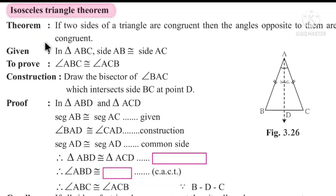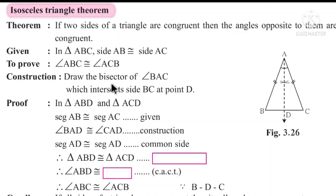Question 4: Isosceles Triangle Theorem. The given triangle ABC has AB ≅ AC. We need to prove that angle B ≅ angle C. For construction, draw AD as the bisector of angle BAC, so angle BAD ≅ angle CAD.